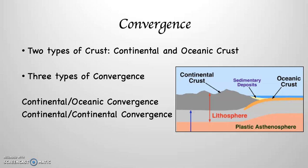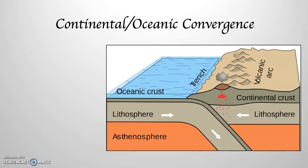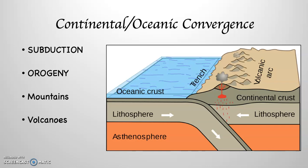With continental-oceanic convergence, a process called subduction occurs. Subduction happens when the heavier, denser oceanic crust slides under the lighter, less dense continental crust, as you see happening in this diagram. That results in orogeny, which means mountain building. You can see that along the coastline in this diagram, on the continental crust, there are indeed mountains and volcanoes. As that subducting oceanic crust goes down into the Earth, it gets very hot through friction and melts. That melting magma rises to the surface and creates volcanoes. Furthermore, subduction results in deep-sea oceanic trenches, which can generally be found right in the interaction zone between the two colliding plates.